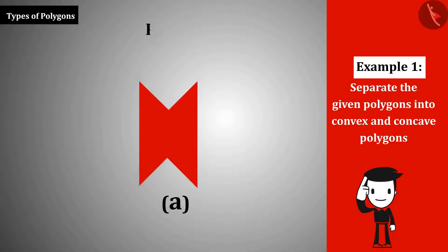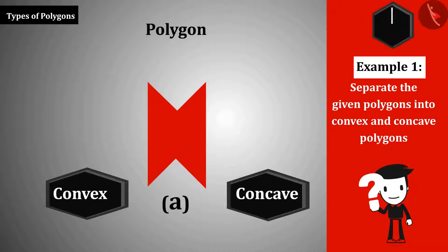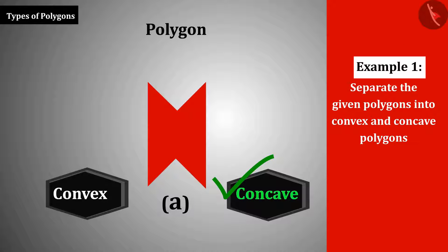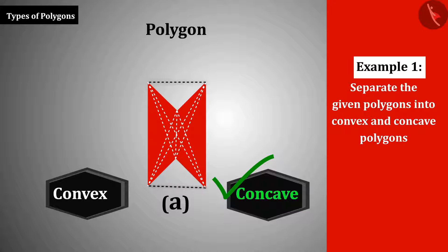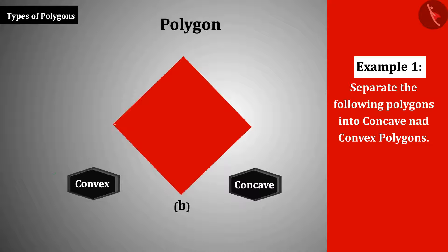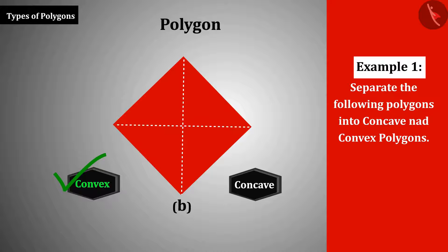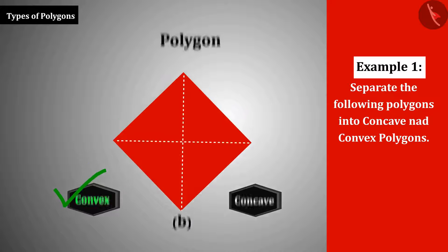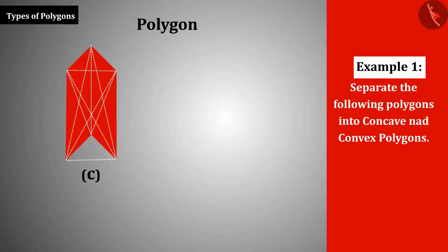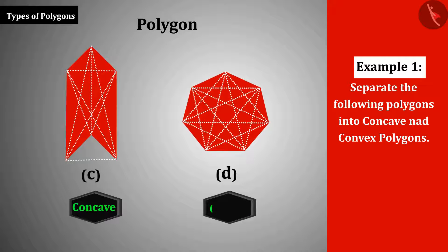Polygon A is a concave polygon, because when we draw the diagonals, two of them are located in the exterior of the polygon. Polygon B is convex, because all the diagonals of this polygon are located in its interior. Similarly, polygon C is concave and polygon D is convex.